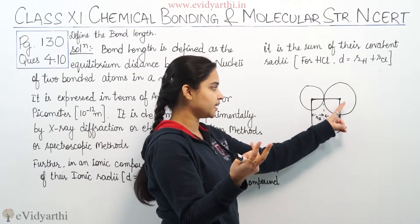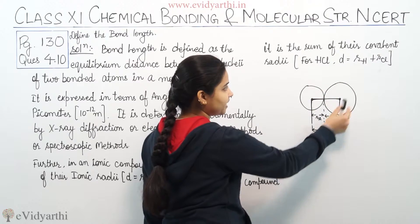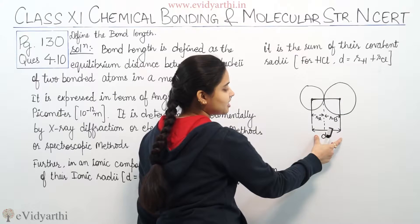So here H, here Cl. So this is the radius of A that means RH and this is the radius of B that means RCl. And this is the bond length.